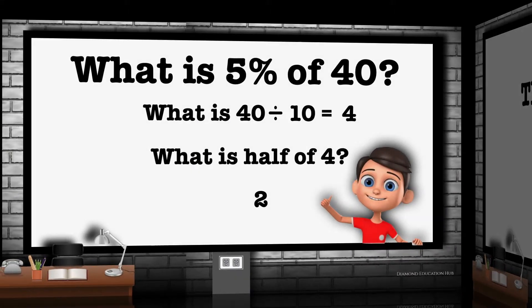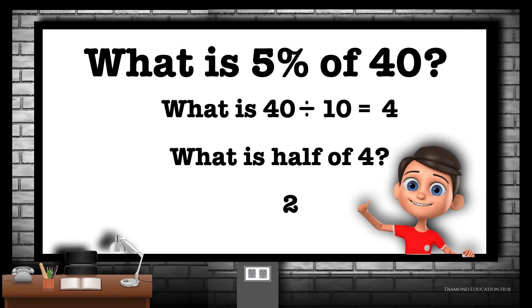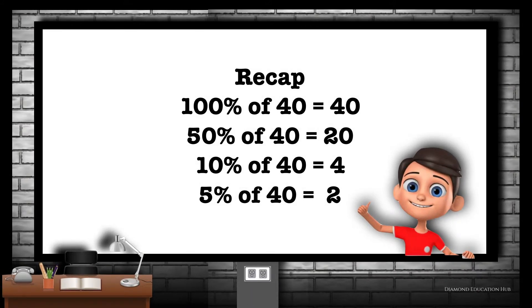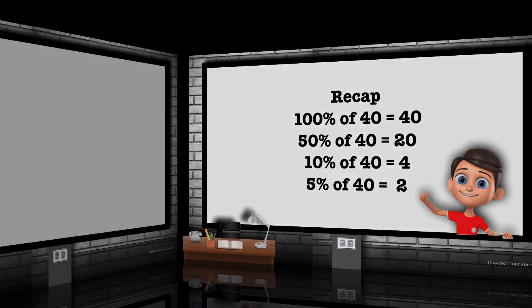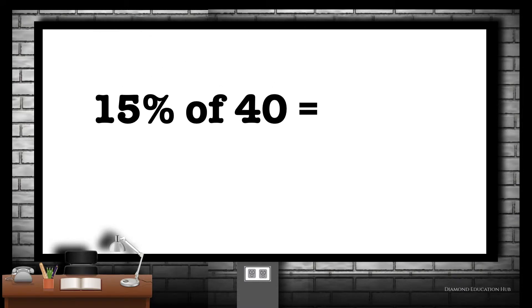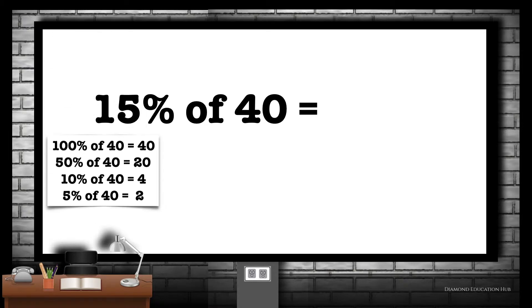What is 5% of 40? We already know that 10% of 40 is 4. If we half 4, we will get 5%, which is 2. Let's recap: 100% of 40 is 40, 50% of 40 is 20, 10% of 40 is 4, and 5% of 40 is 2. So, 15% of 40 is 6.